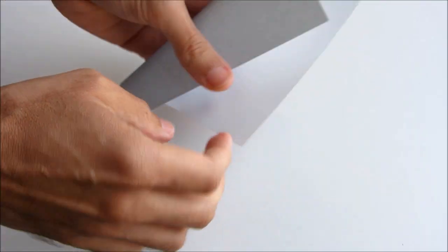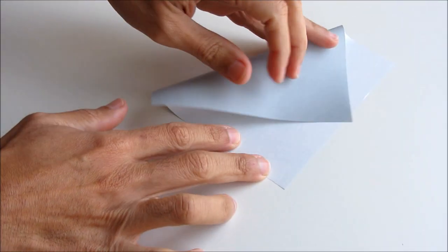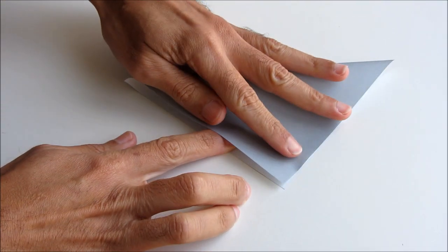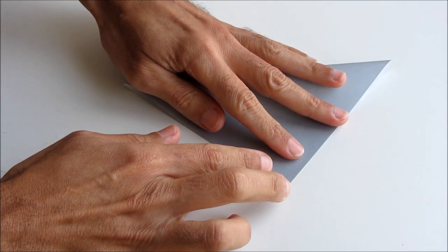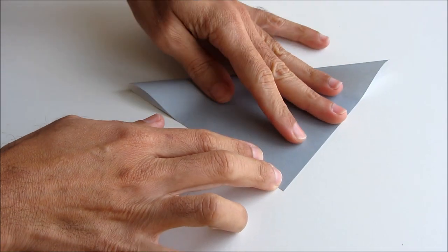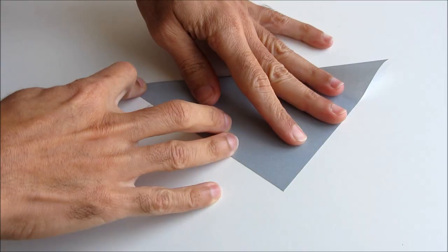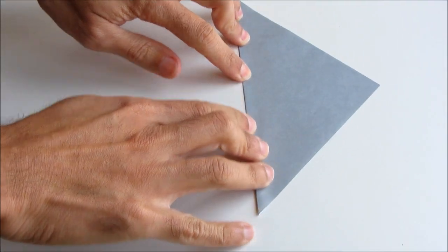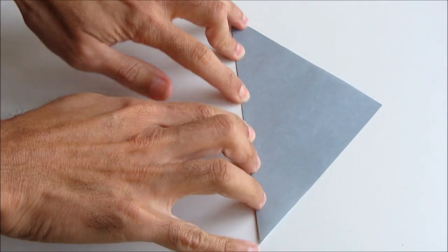Start with a square of origami paper and then make a fold along the diagonal as we're showing here. Crease that fold well.